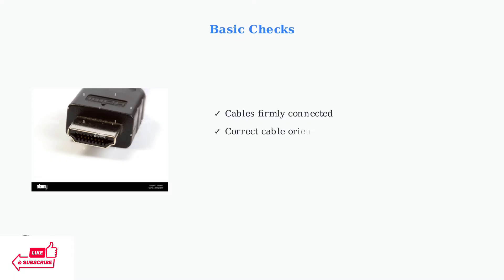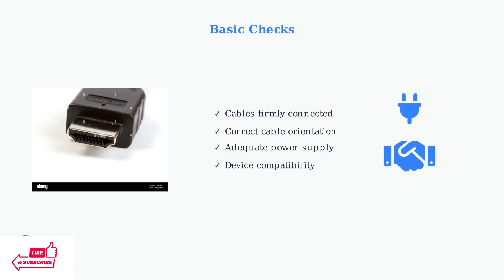Start troubleshooting with basic checks. First, ensure all HDMI cables are firmly connected in the correct orientation. Confirm the splitter has adequate power from a reliable source using the original power adapter. Verify all devices support the same HDMI version and HDCP standards.